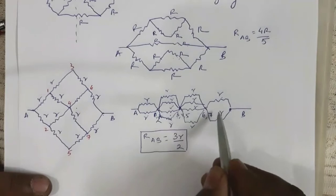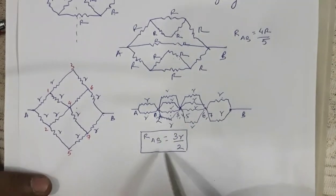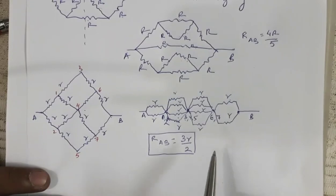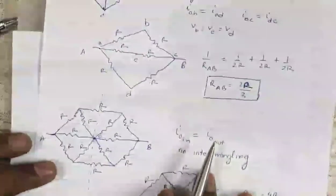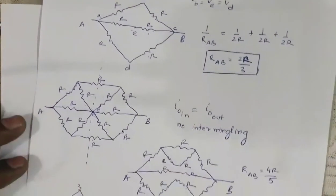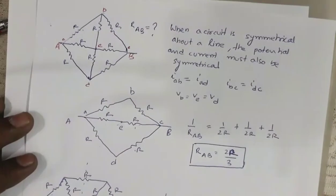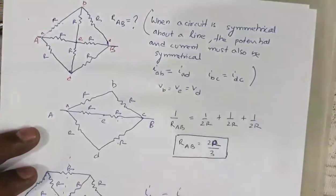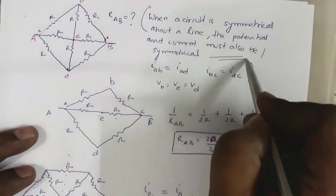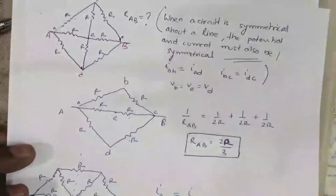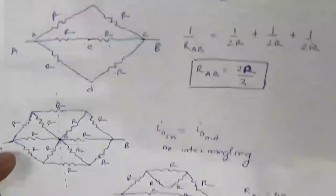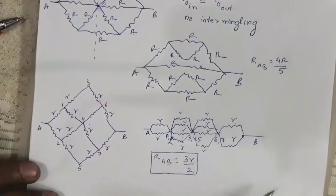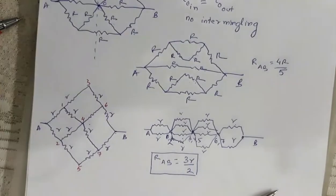You can also try this yourself and check whether you get the same result. This is how you can solve circuits where resistors are identical and there is a line of symmetry — that is the concept you have to use. I hope this video will be beneficial for you to find equivalent resistance of circuits. I will be uploading a few more videos on circuit solving very shortly. Thank you for watching.